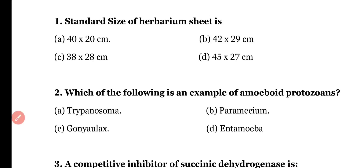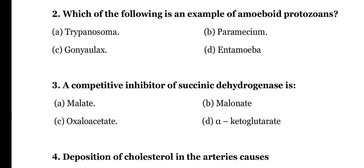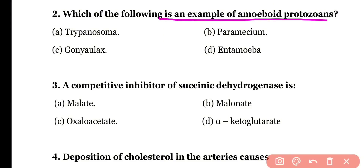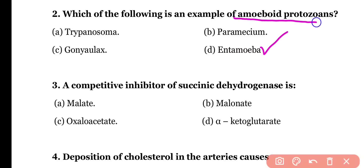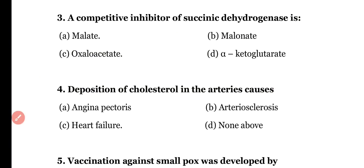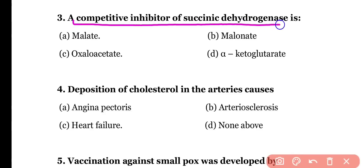Question number two: which of the following is an example of an amoeboid protozoan — Trypanosoma, Paramecium, Gonialux, or Entamoeba? The correct answer is option D — Entamoeba histolytica is an amoeboid protozoan.